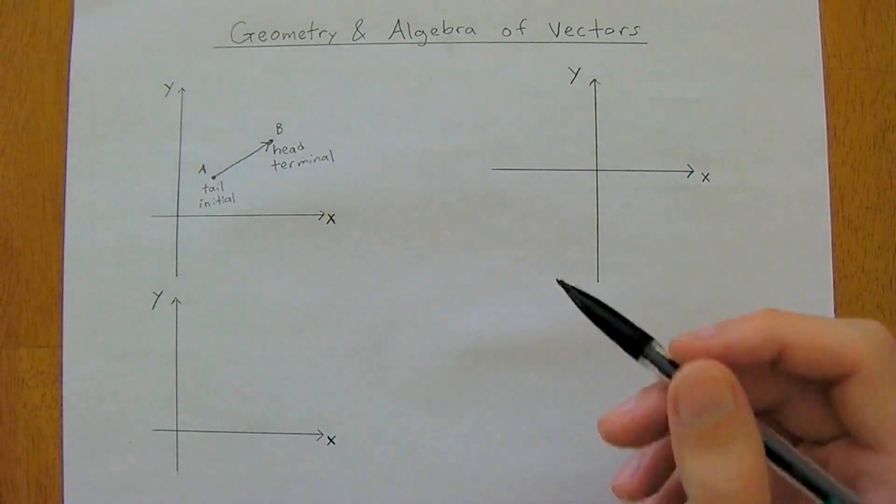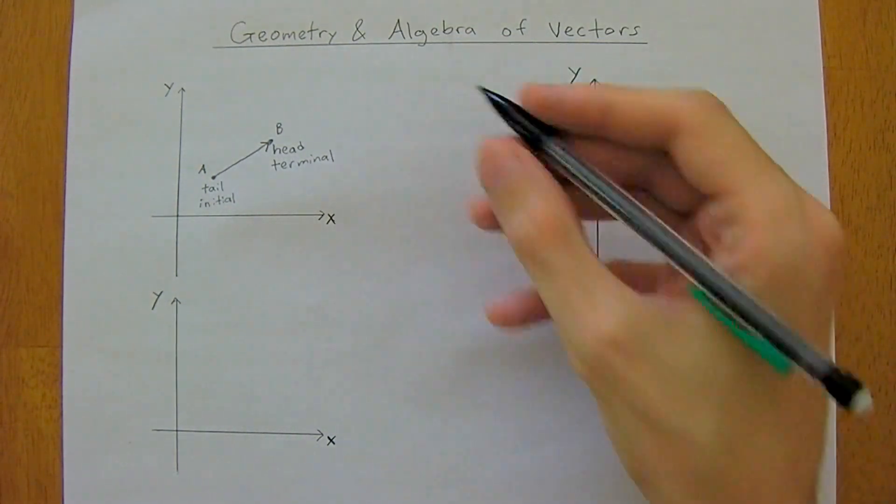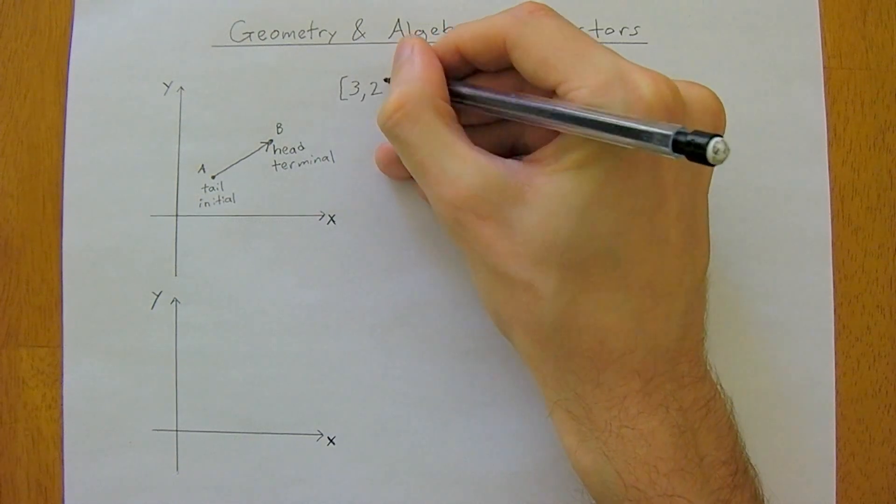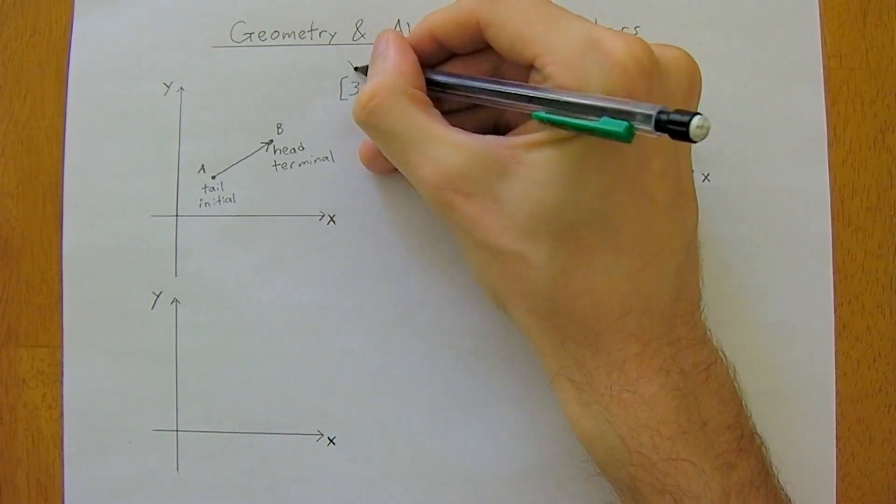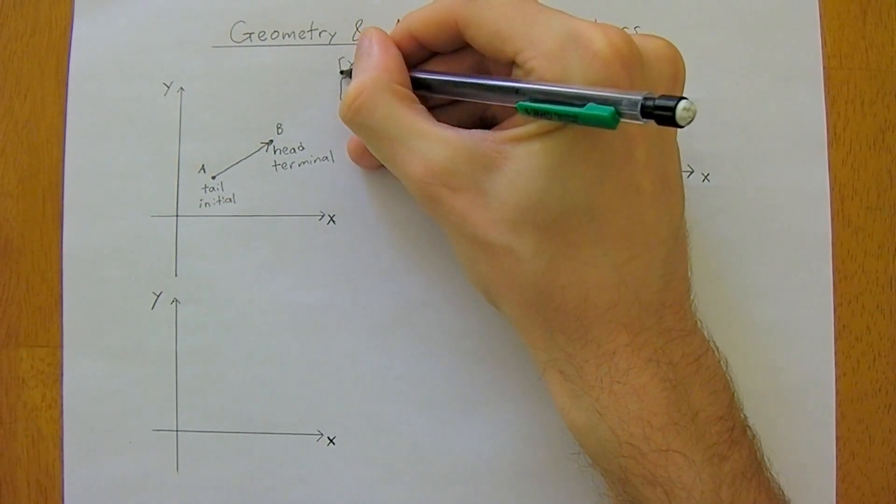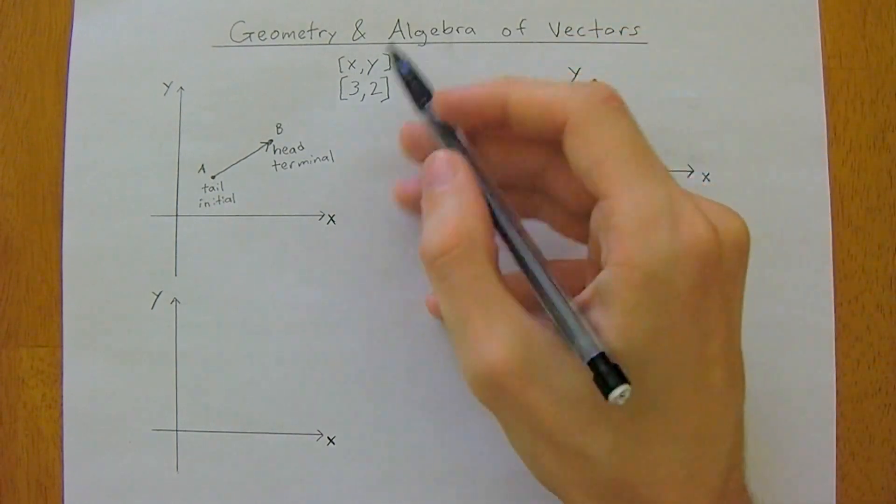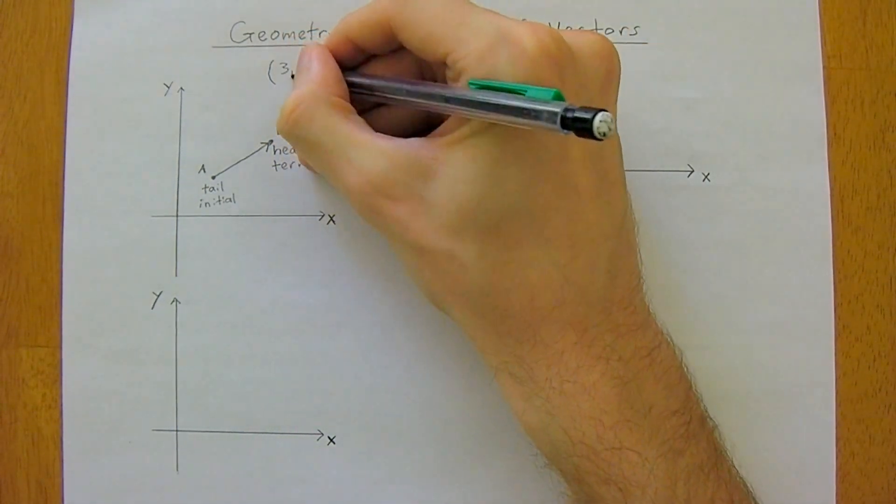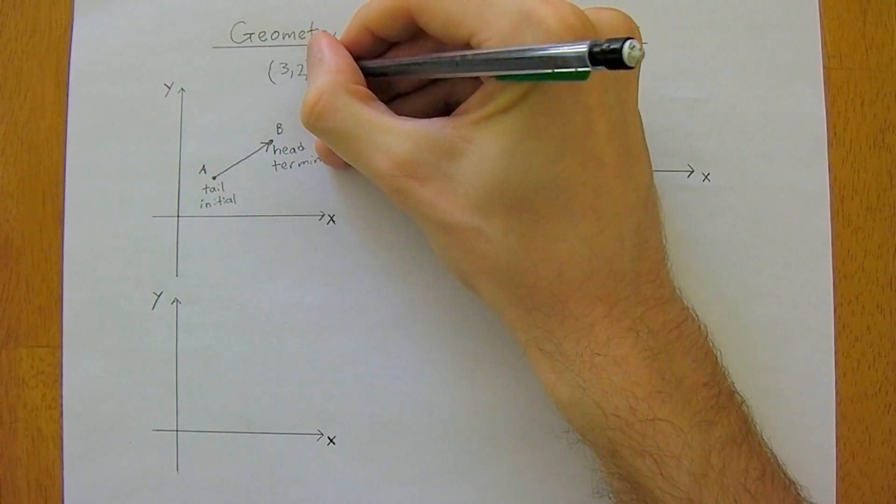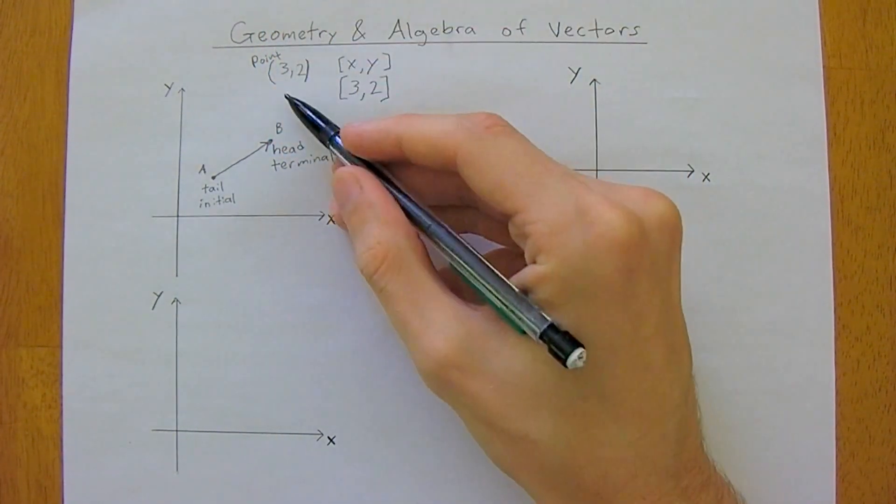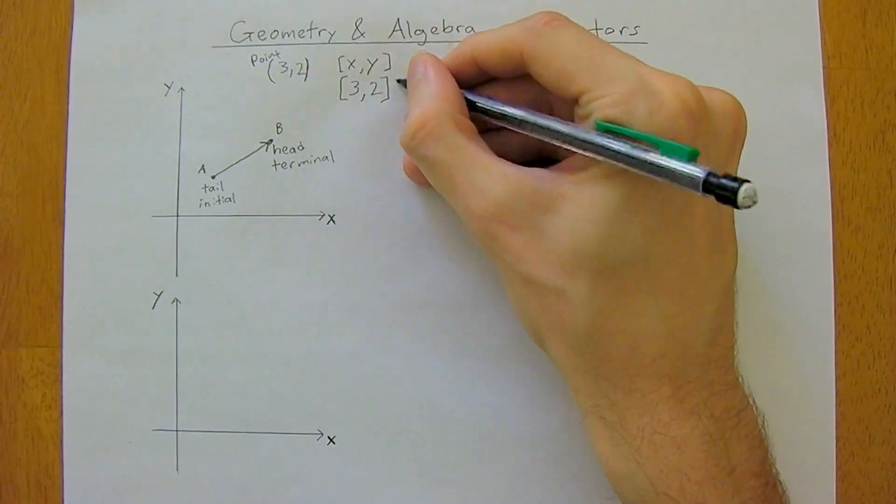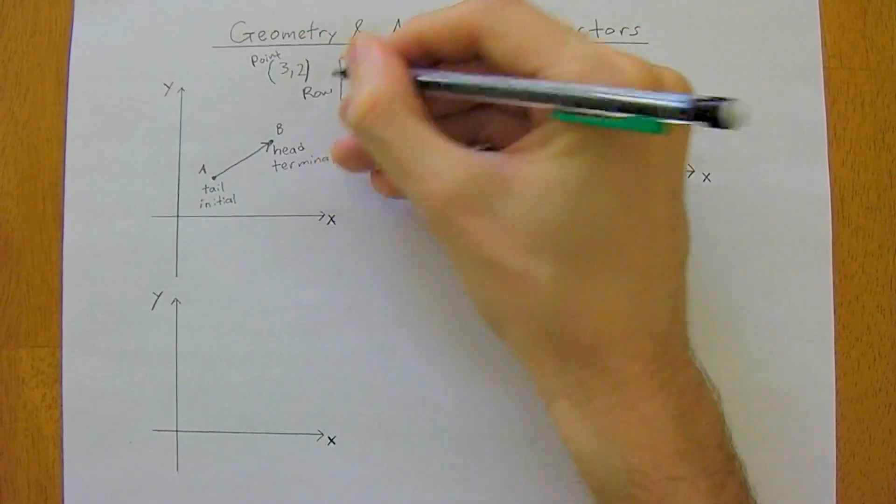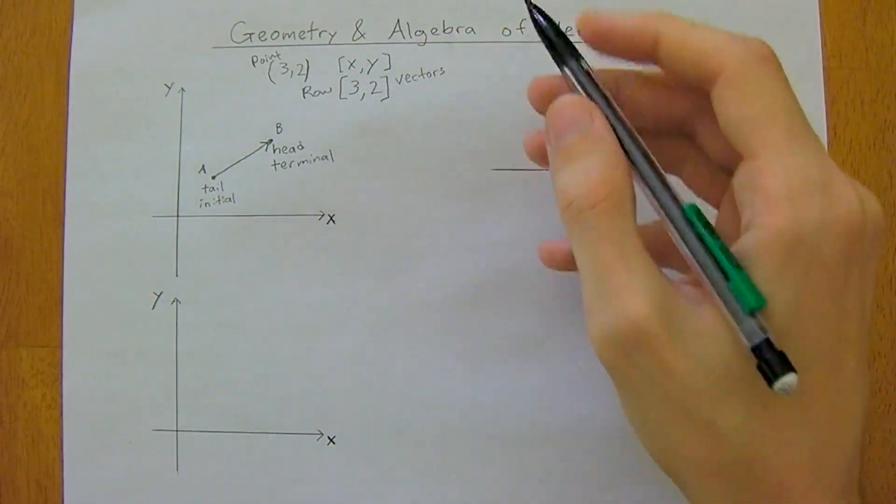Another thing to know is that we can have row vectors. Say you have the row vector [3, 2], this would correspond to x, y. With square brackets, this is denoting it's a vector. But say we had regular brackets, this would be referring to a point. Square brackets are for vectors.